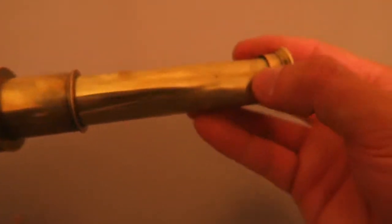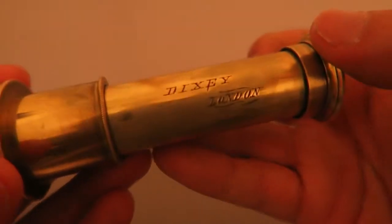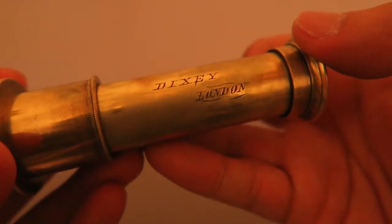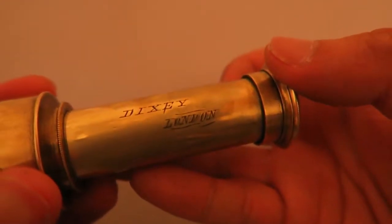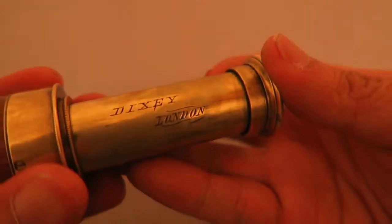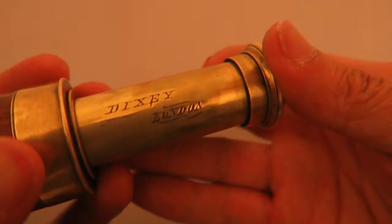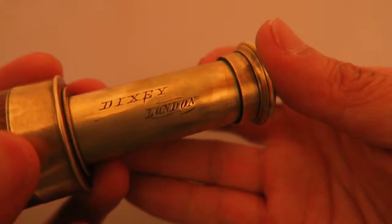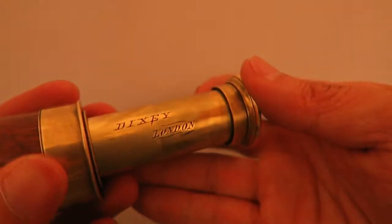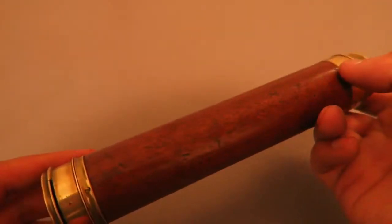Anyway, a bit more about the telescope itself. This telescope was made in London by a company named Dixie, that is the company of C.W. Dixie, which was established in London in 1777. It's still going today. They don't make telescopes anymore, they make spectacles, which is really cool. Very famous company.